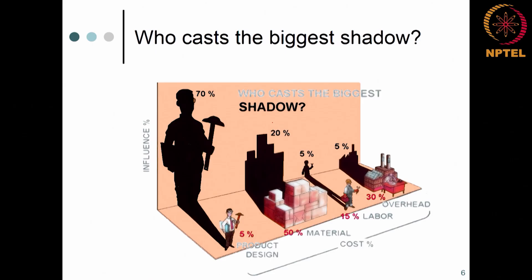We will step one step backward and take a look at the design process itself. This particular chart is borrowed from the Monroe Associates website. If you look at it, these are the four different major heads: cost percentage for product design, material cost, labour cost, and overhead.